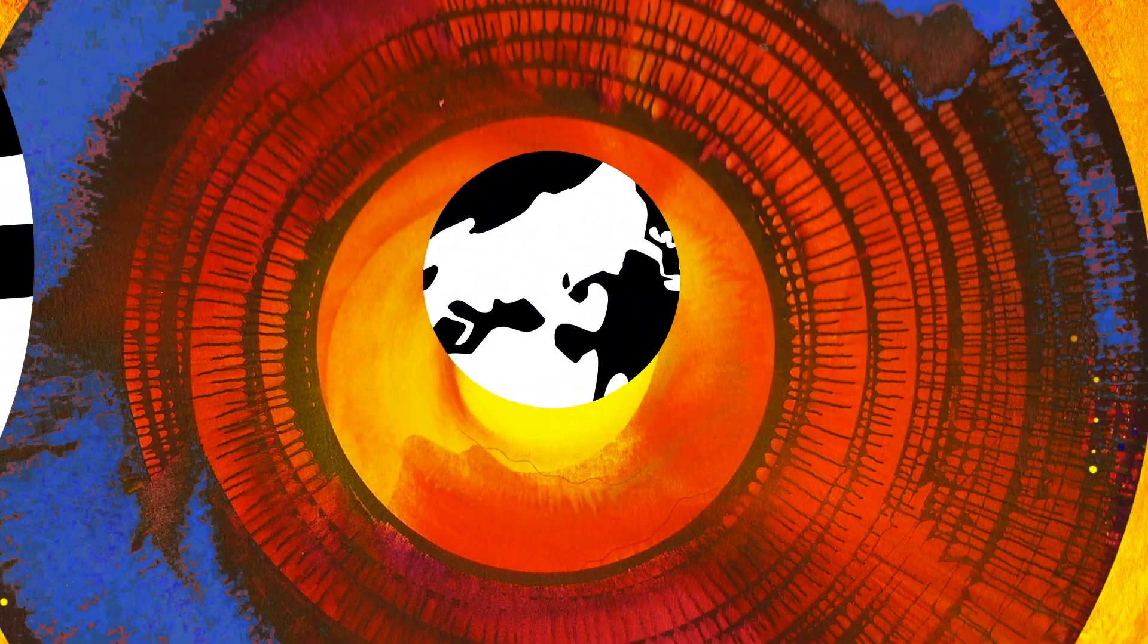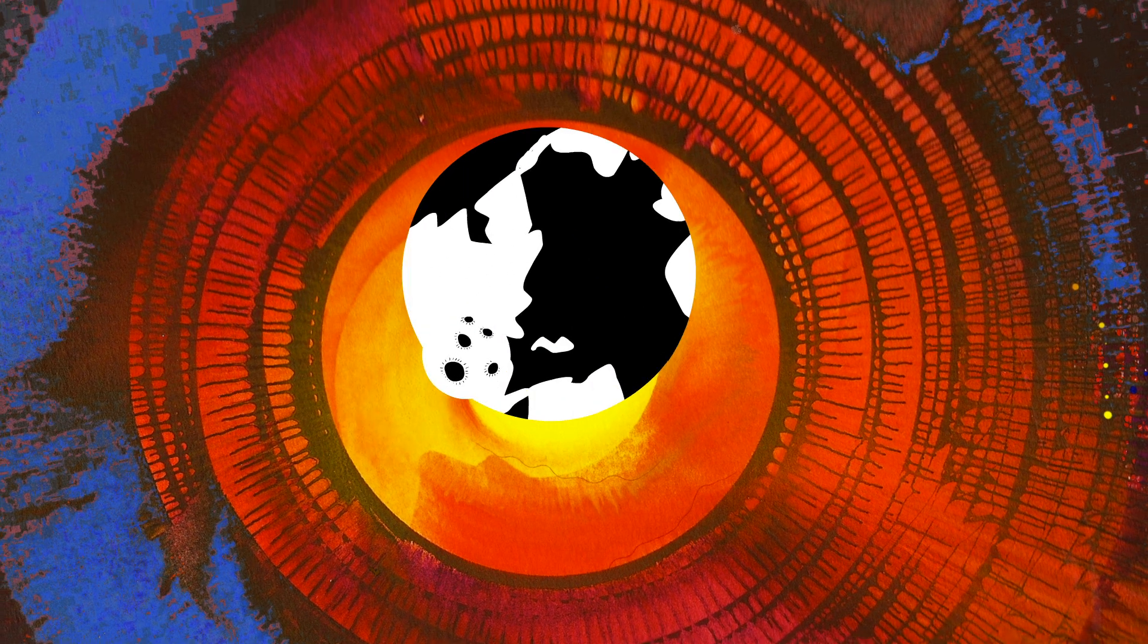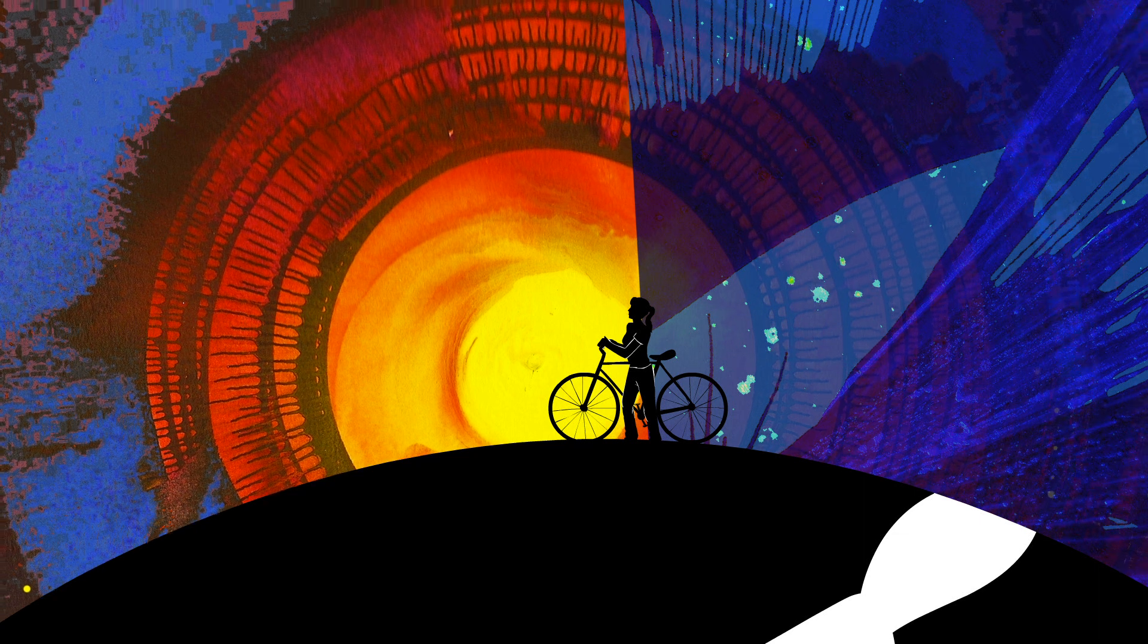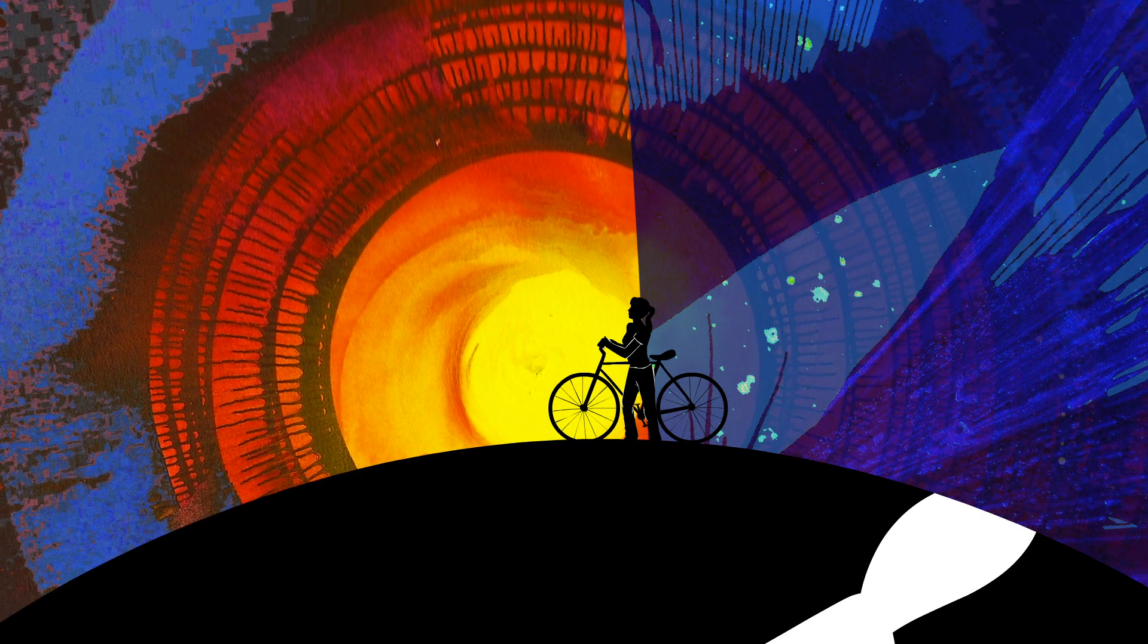And everything that formed out of the cloud, the Sun and the planets around the Sun and the moons around the planets, all inherited this spin. And this inherited spin is what gives us night and day, and this day-night cycle is what drives our weather.